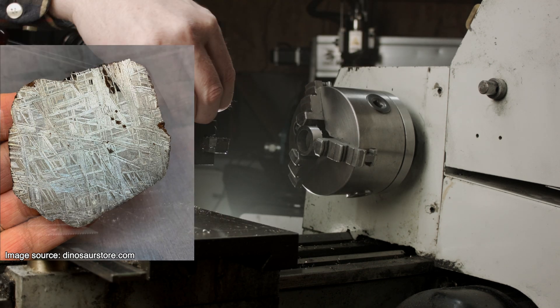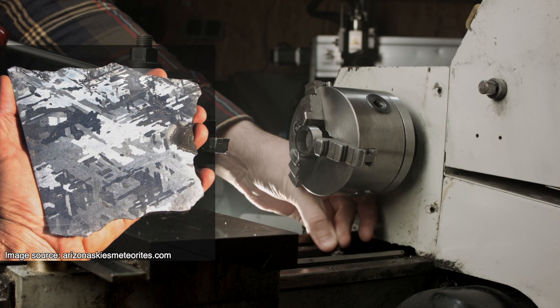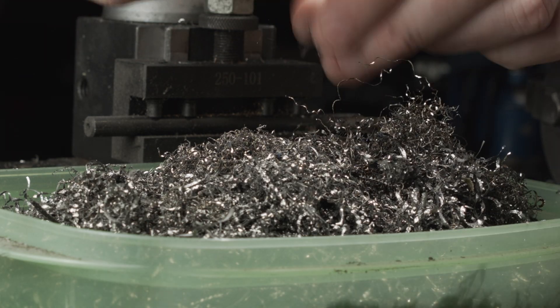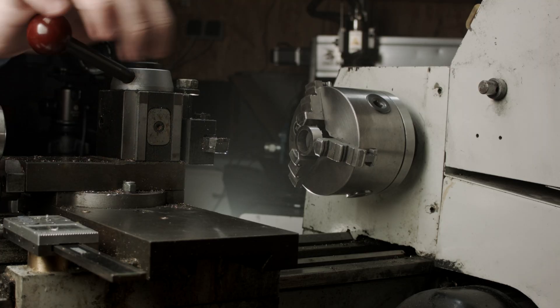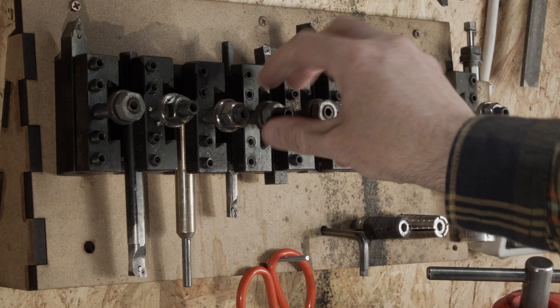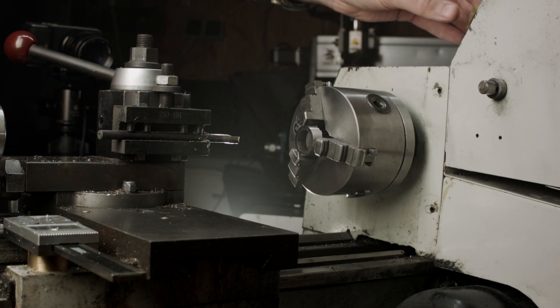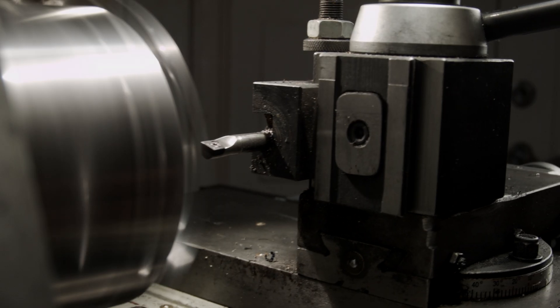And compare this to the Canyon Diablo, which has a pretty coarse pattern as you can see here. So it takes around a million years to create this pattern and it needs zero gravity, which makes it pretty much impossible to reproduce or it's very impractical. Which is why we can tell beyond reasonable doubt that this is indeed a genuine meteorite.